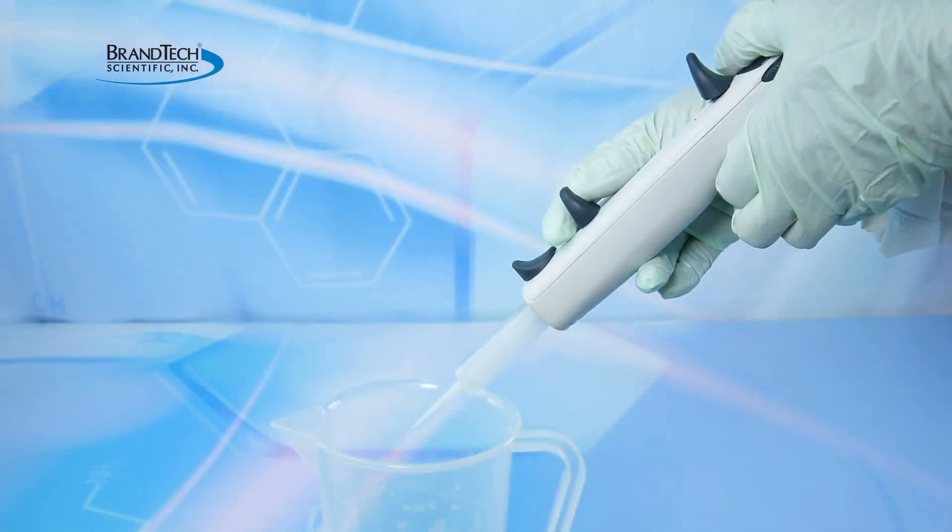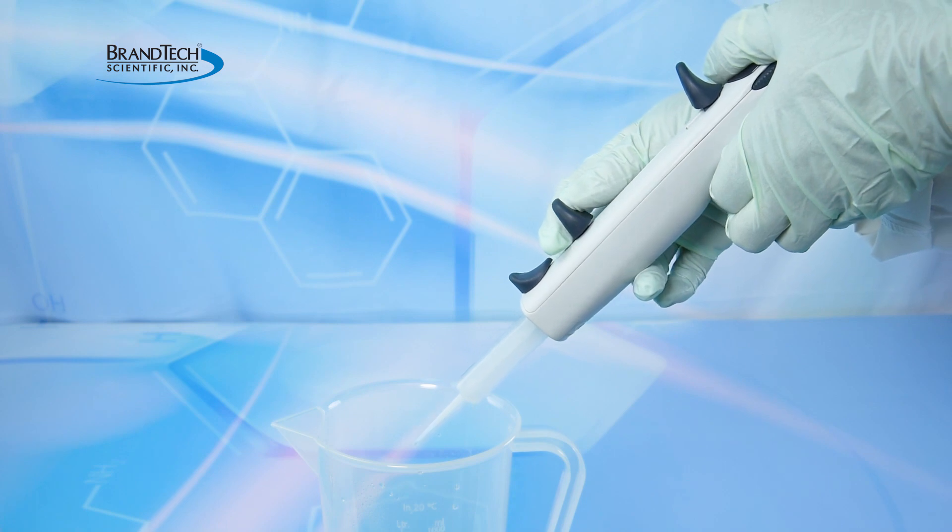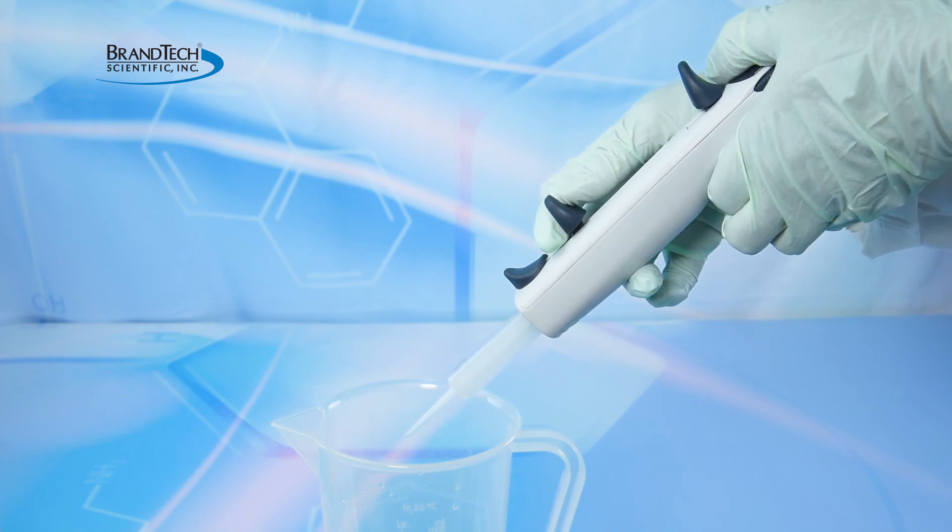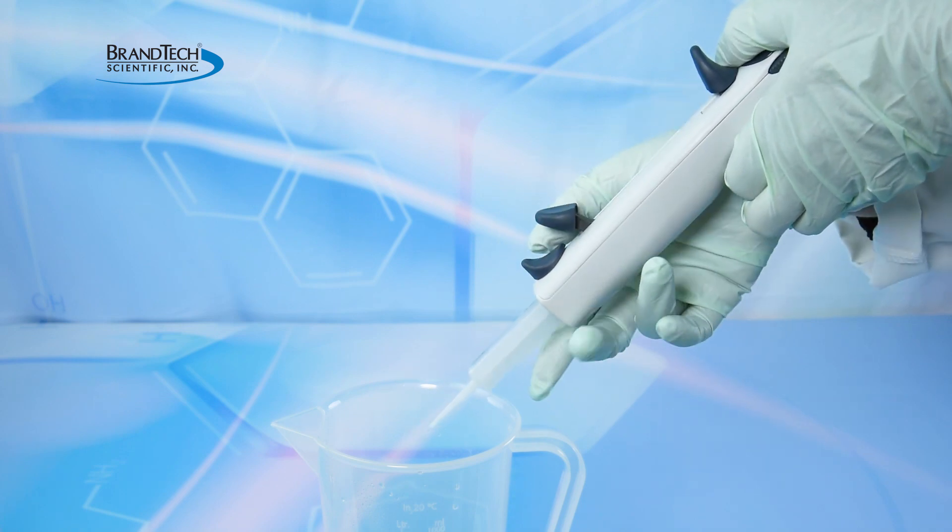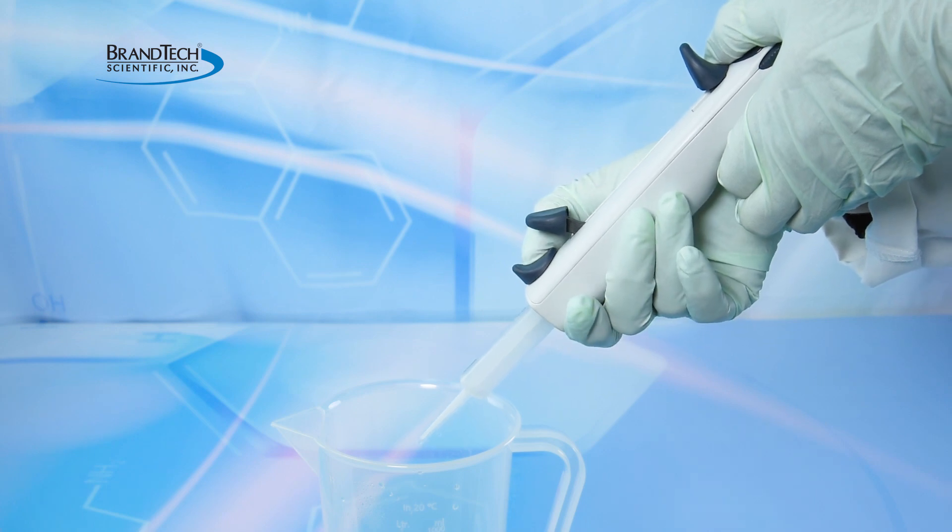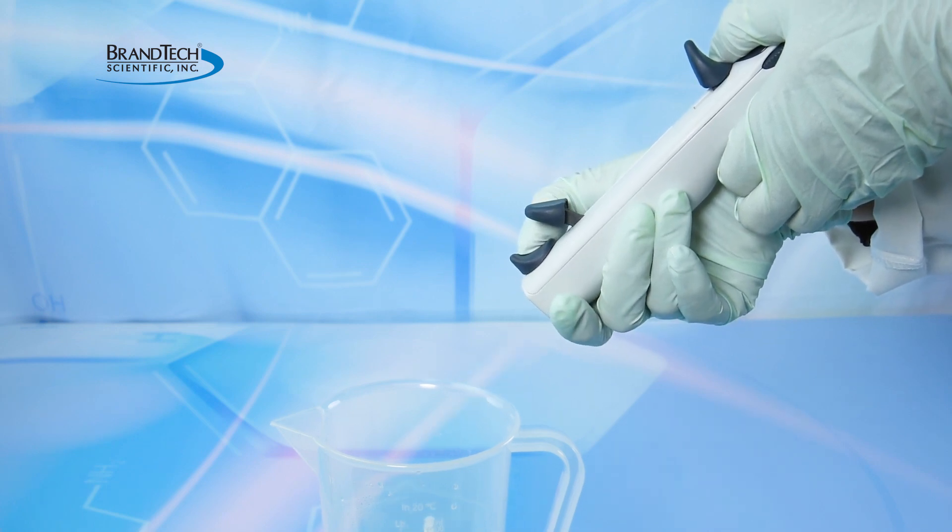Once you have completed the dispensing, the PD tip should be removed. Push the locking filling lever to the lower position and swing out the lever into the unlocked position, then push the ejection button to discard the PD tip.